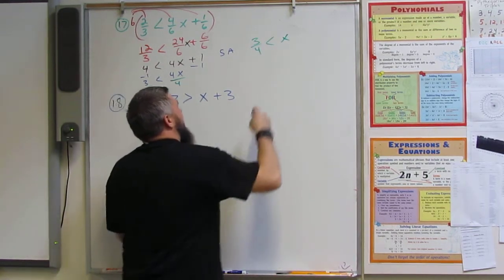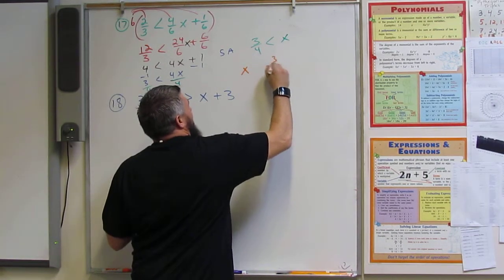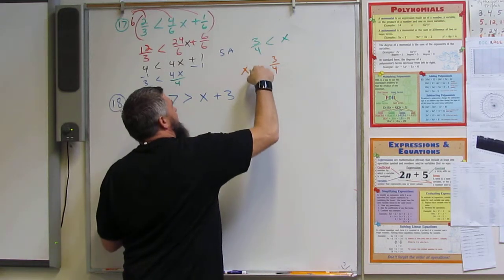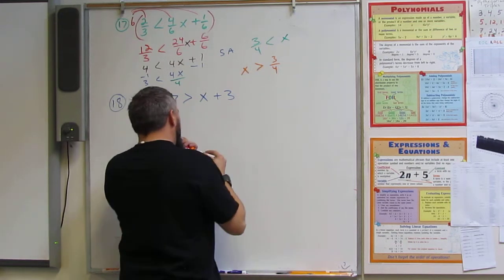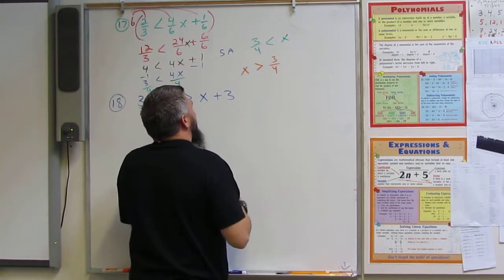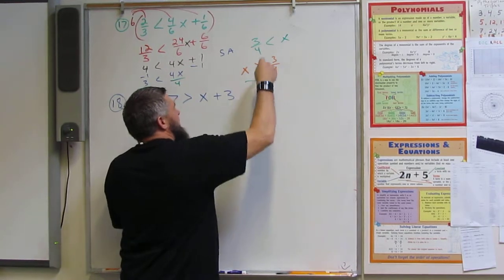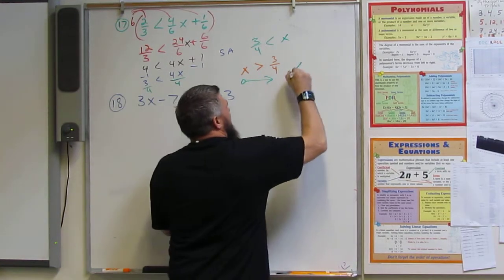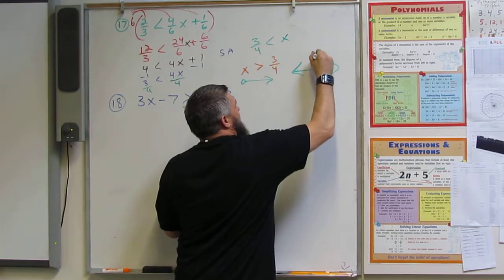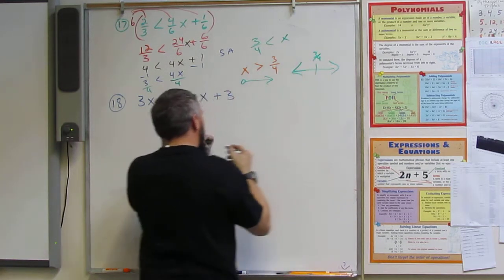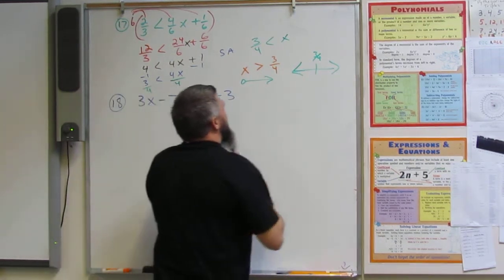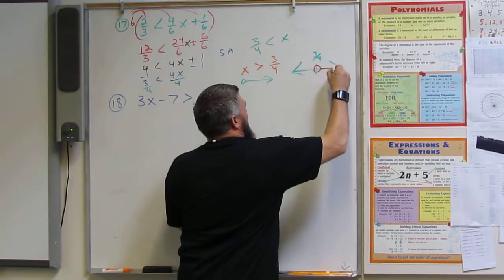Now I want my x on this side, 3/4 on this side, so it's still pointing at 3/4. So my arrow looks like this, and it's an open circle. So I have 3/4, open circle, going this way.